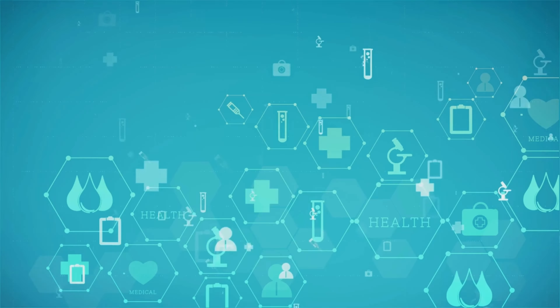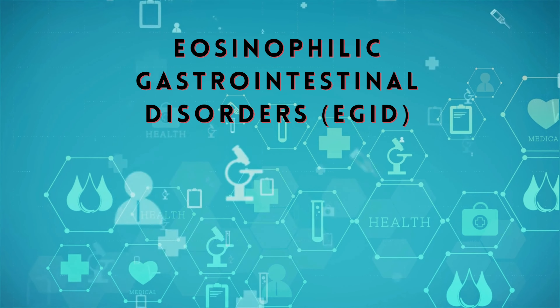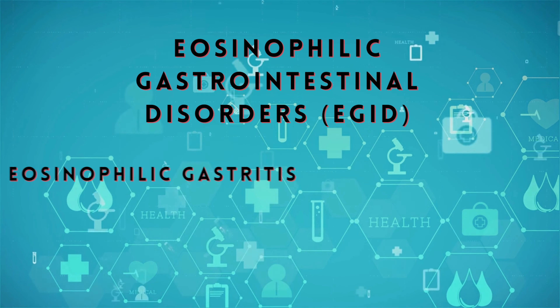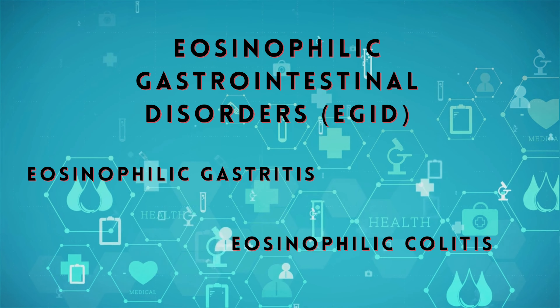In addition, some researchers believe that EOE may actually be part of a larger group of conditions called eosinophilic gastrointestinal disorders, which also include eosinophilic gastritis and eosinophilic colitis. These conditions are characterized by the appearance of eosinophils in the gastrointestinal tract. So EOE may show up in the esophagus, but its root cause occurs in the gut.